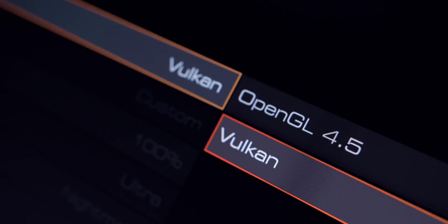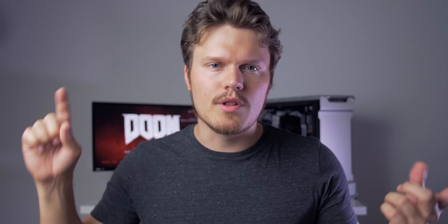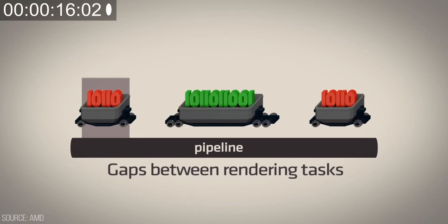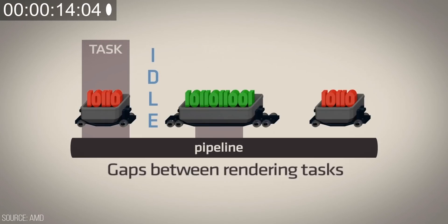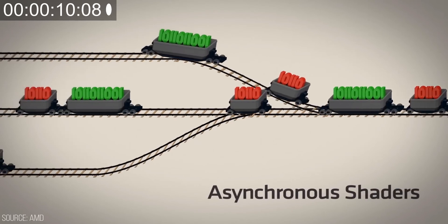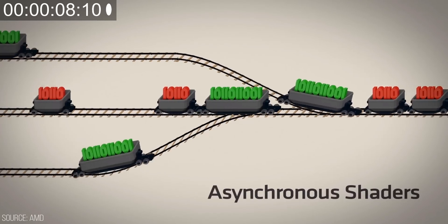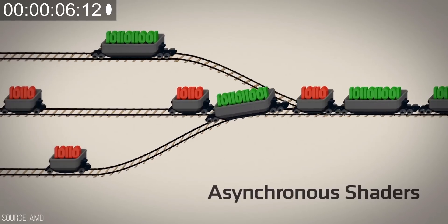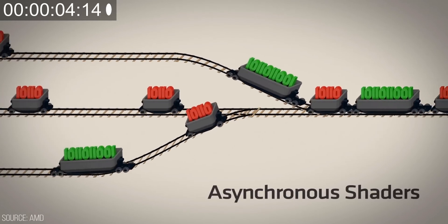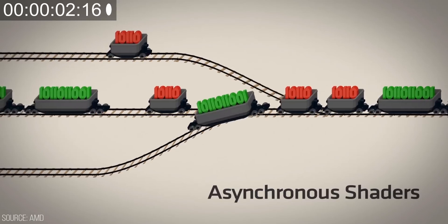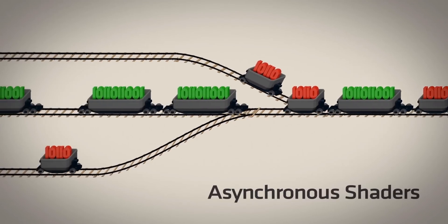And the promised Vulkan API rollout for Doom is finally here, utilizing asynchronous compute shaders, which AMD has been long promising to deliver high performance gains. Thanks to asynchronous compute, gaps between rendering tasks leave part of the GPU idling, which in turn reduces GPU efficiency. Asynchronous shaders provide a full solution as they operate like a highway, eliminating traffic lights and scheduling issues, and enabling tasks from multiple sources to be submitted to the GPU and processed simultaneously.